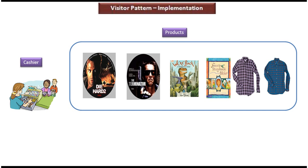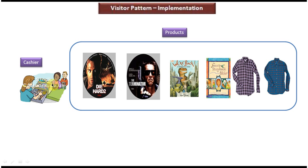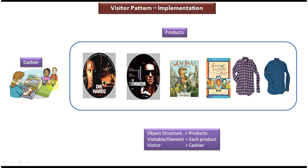Now we will see the scenario where we can use visitor design pattern. Suppose you are going to a shopping mall and you decided to purchase 2 DVDs, 2 story books, and 2 shirts. You collect all these products and go to the cashier. The cashier checks the price of each product, calculates the total price, and tells you. Here, the cashier is a visitor object, each product is a visitable or element object, and the products collection is the object structure.